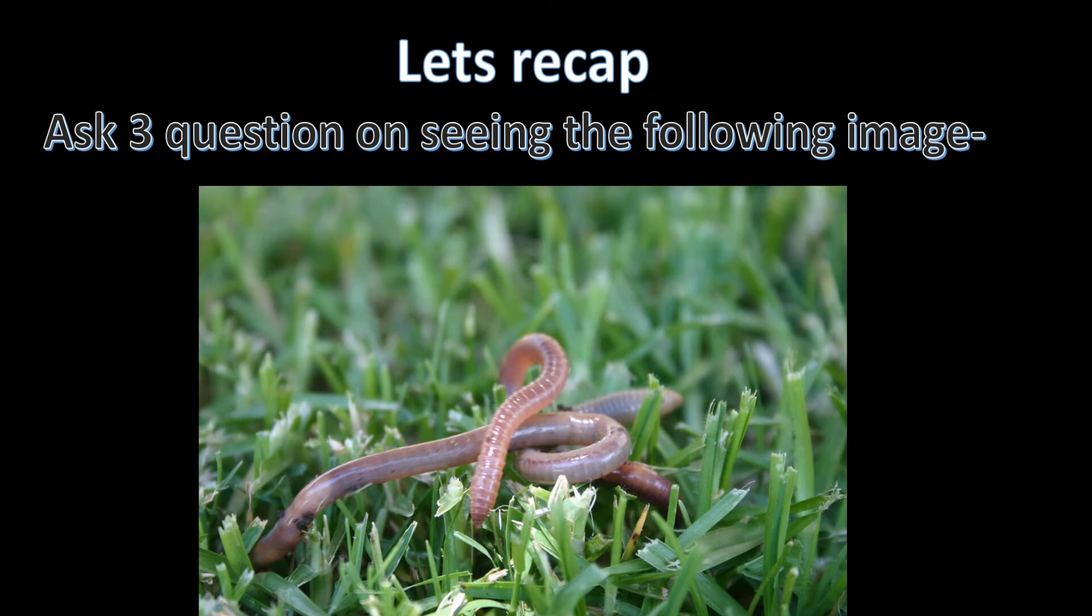Can you see this image? What is this animal or what is this? You have to ask three questions on seeing this following image. These three questions should be based on the five W's and one H technique of asking questions.